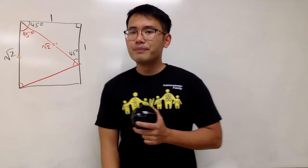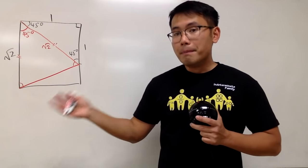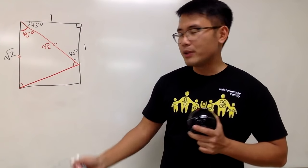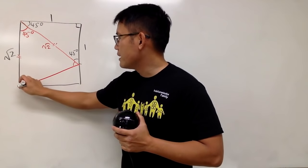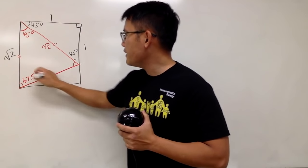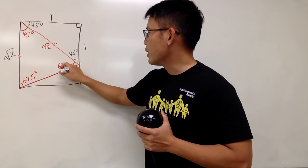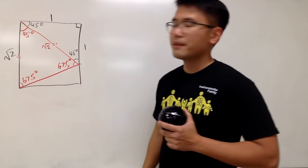This triangle-wise, 180 minus 45 and then divide it by 2. You'll get this right here being 67.5. And likewise, this is also 67.5 degrees. Very good.